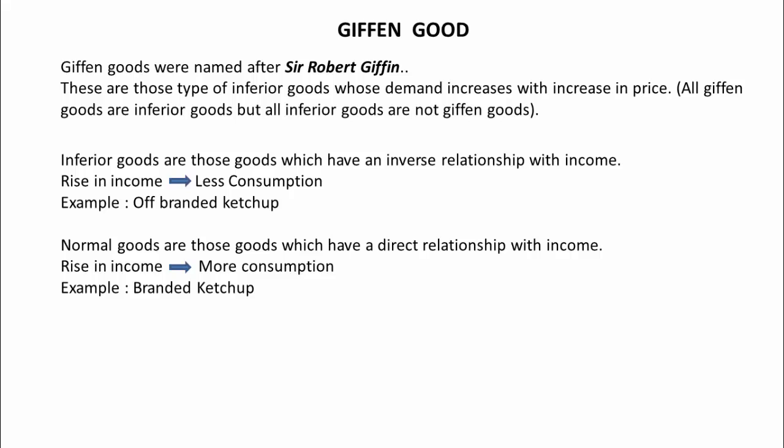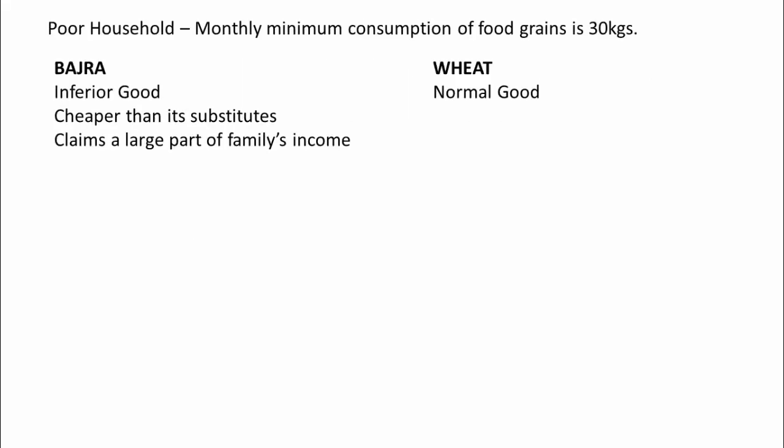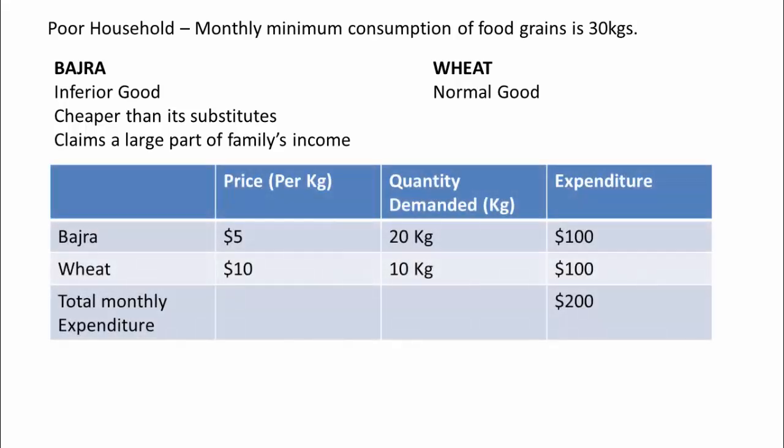Coming back to our discussion on Giffen Goods, let us take an example to understand this. Say there is a poor household and their monthly minimum consumption of food grains is 30 kilograms. They consume two goods: Bajra and wheat. Out of these two, Bajra is an inferior good which is much cheaper than its substitutes and claims a large part of their income, and wheat is a normal good. Suppose that they consume 20 kgs of Bajra and 10 kgs of wheat, and Bajra is priced at $5 per kg and wheat at $10 per kg.